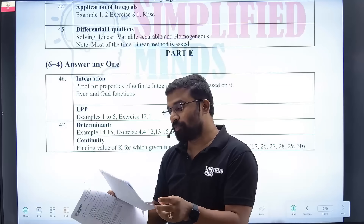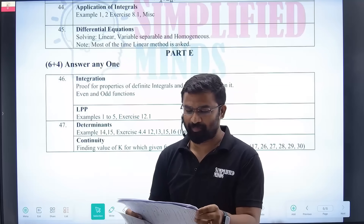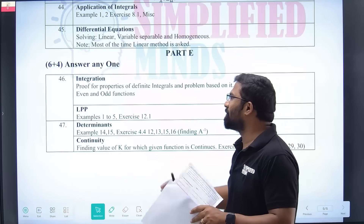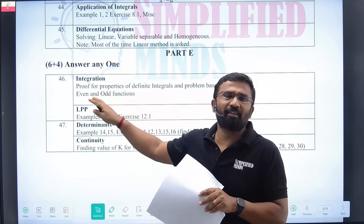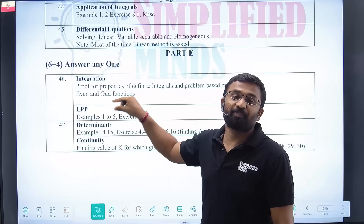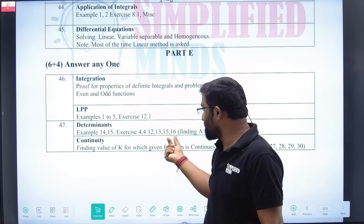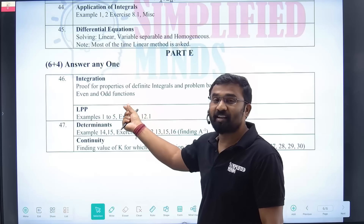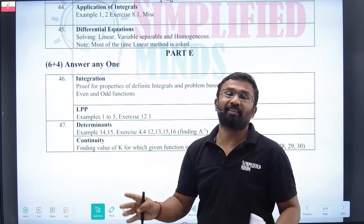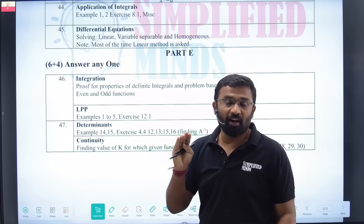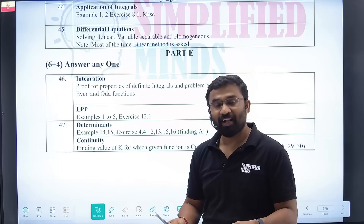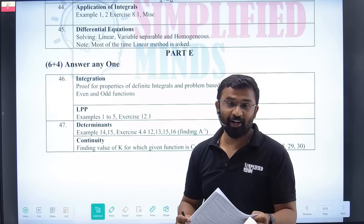When I see this blueprint and model check, this is how easy to do this chapter. These are the questions, these are the exercise questions, and these are the examples. Maths is actually like physics. You have a target of 80 out of 80. Let's see how many of you are targeting full marks.